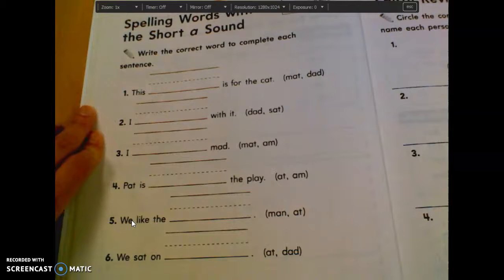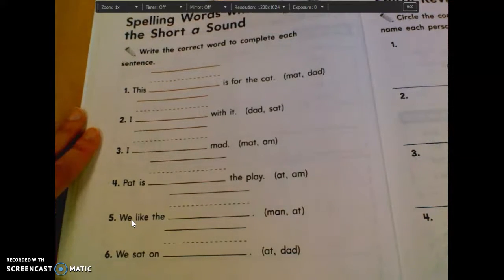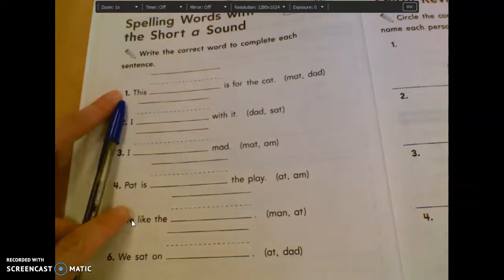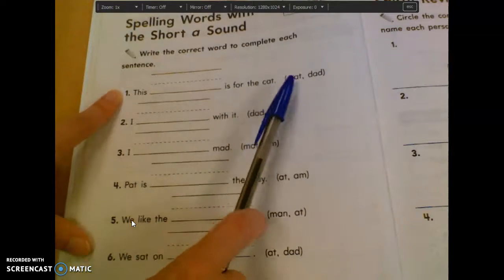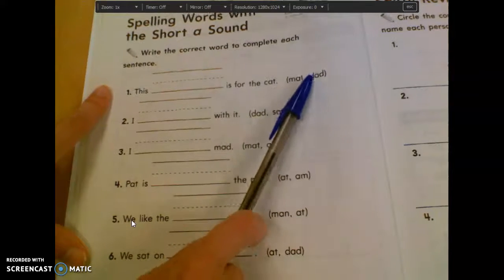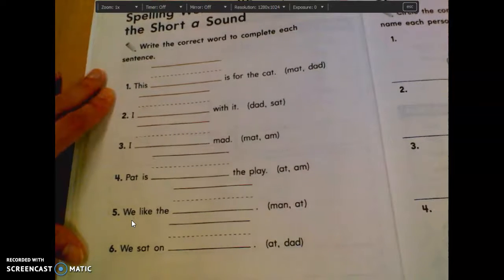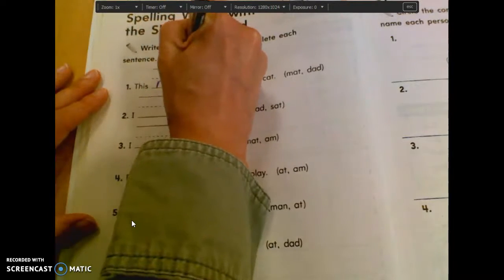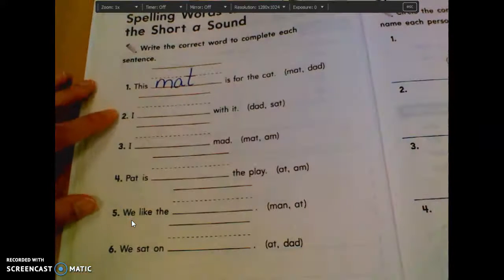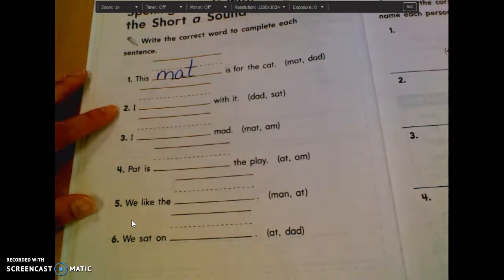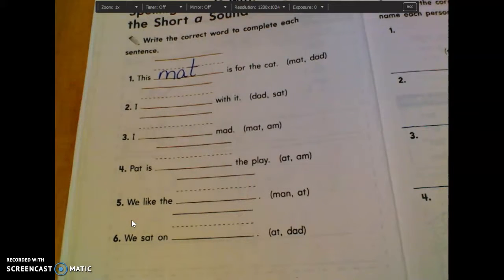So go to page 12, please. If you are still filling in the animals one, I want you to go to page 12 anyway so we can do this together and then you can go back to the animals one. Page 12. On page 12, it says to write the correct word to complete each sentence. So sentence number one says, this blank is for the cat. It gives us two different words that we can use to put in that sentence. We have the word Matt and Dad. Which word makes sense in that sentence? Helen's. Matt. This Matt is for the cat. It rhymes. So you're going to write the word Matt on the line.